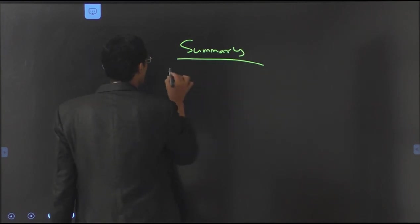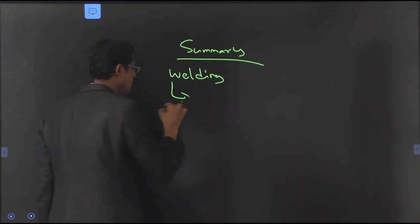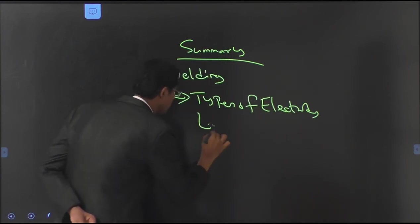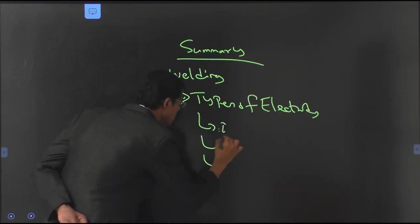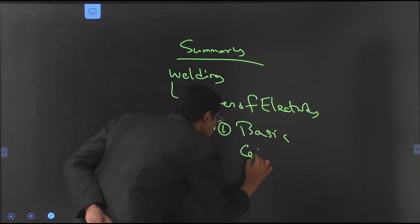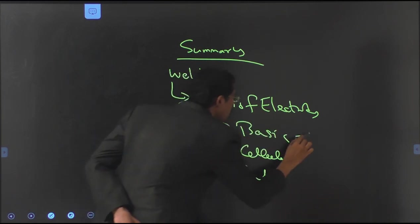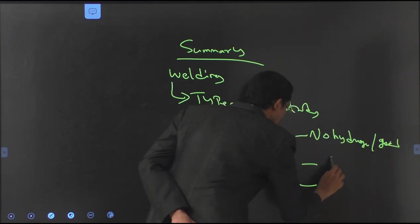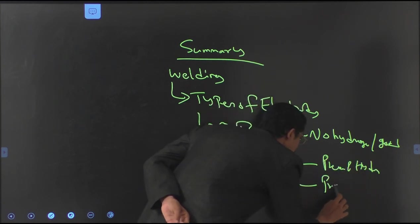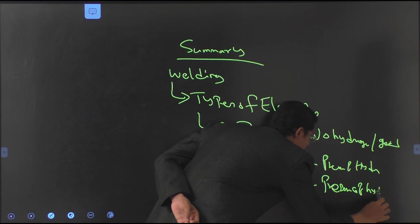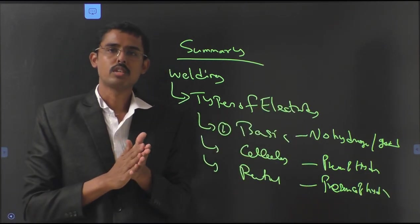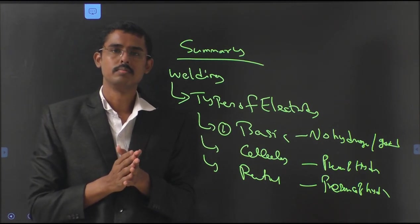Summary: In welding we have seen today the types of electrodes. The three types of electrodes are basic, cellulose, and rutile. In basic there is no hydrogen — good mechanical properties. In cellulose and rutile, hydrogens are present. This is how the types of electrodes we have seen. The remaining part of the subject we will see in the next session. Thank you.